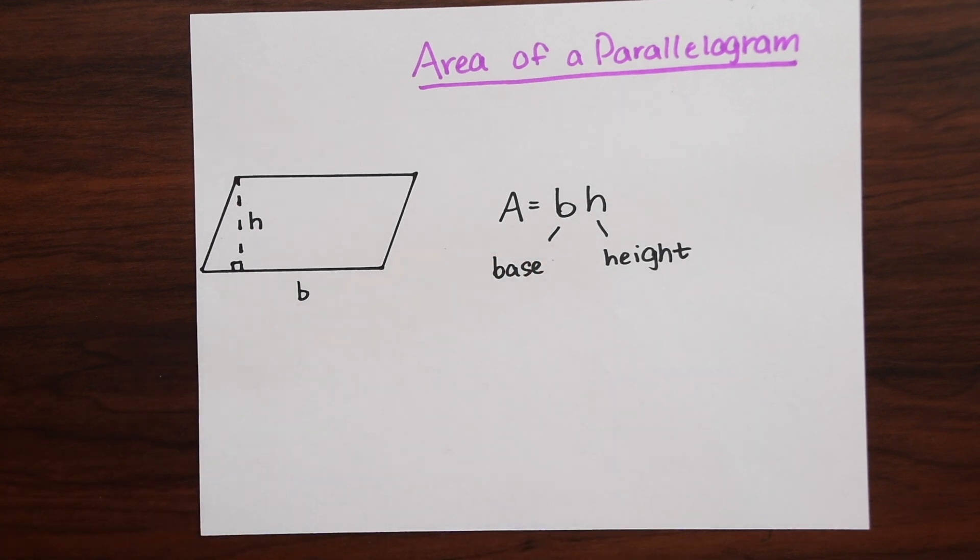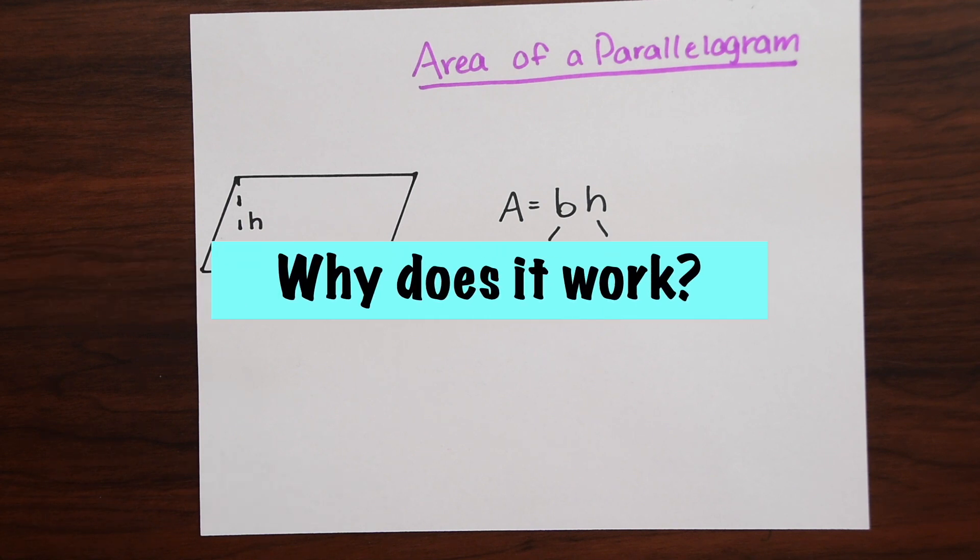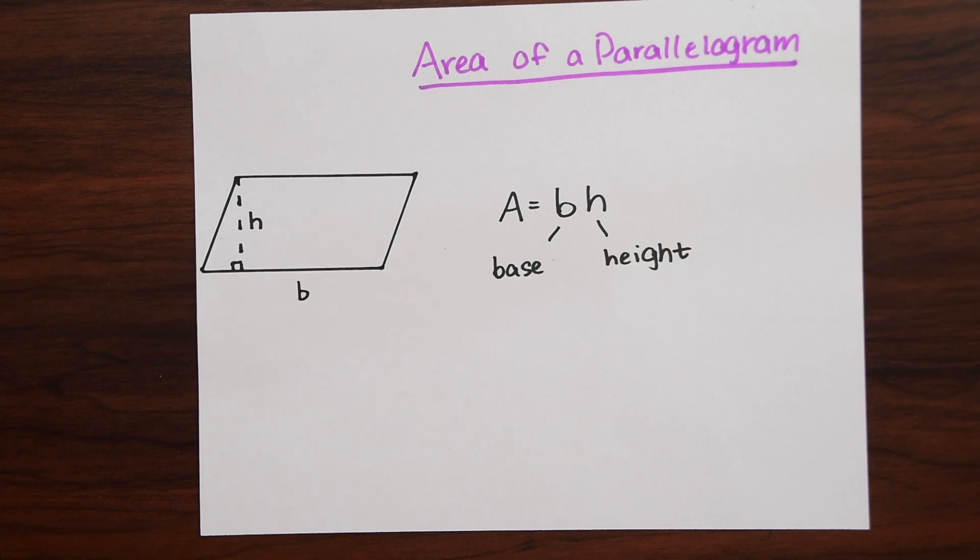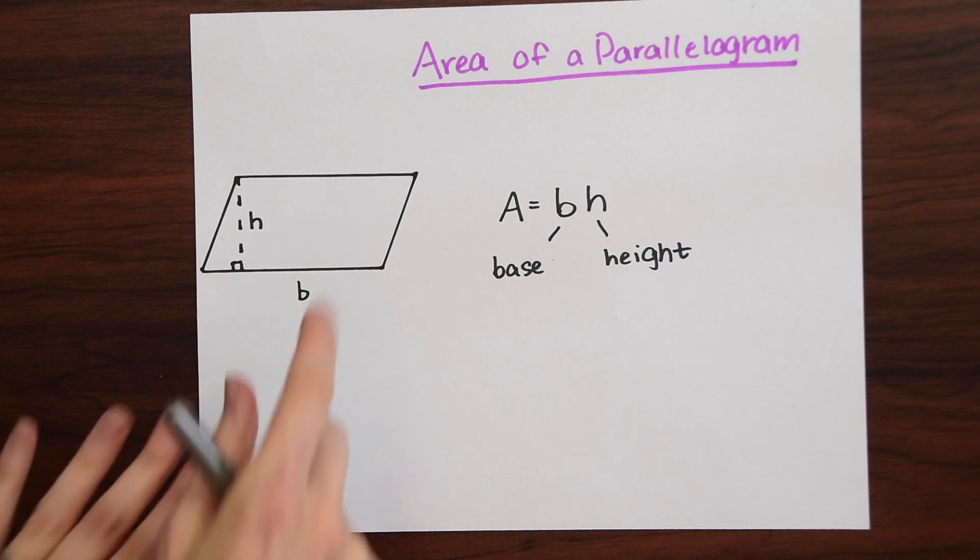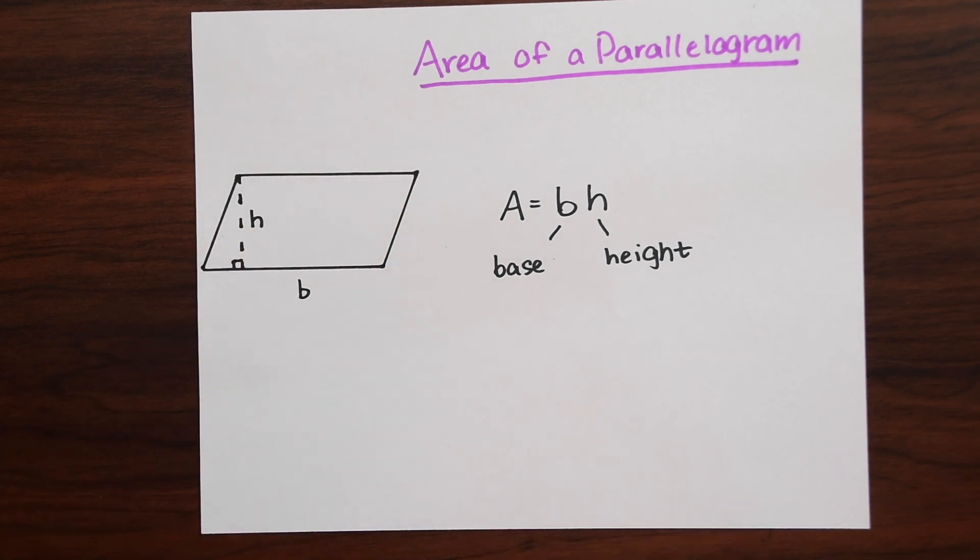So it's super easy to remember. It's the same formula that we've been working with when we work with rectangles. I just want to explain a little bit why that is because this is a different shape. So why does this different shape have the same exact area formula?